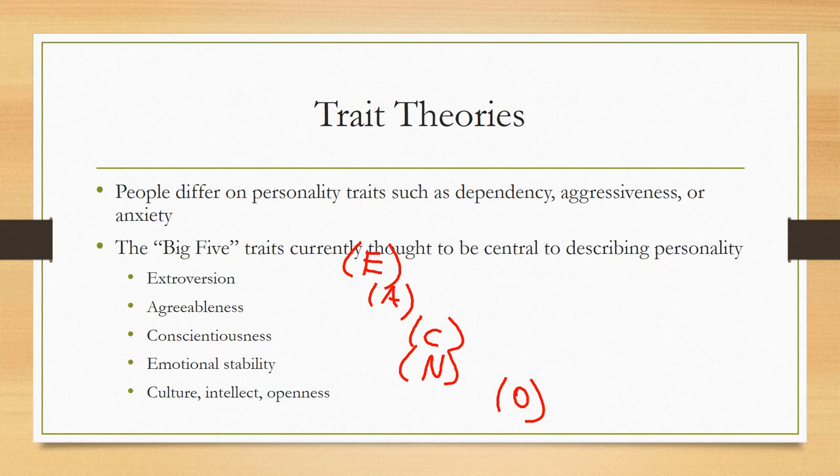Psychologists have done a lot of different theories about how we can measure personality based on personality traits such as dependency, aggressiveness, or anxiety. There are trait models of 16 and some of three, but the one most universally used is called the Big Five traits central to describing your personality. Those Big Five traits are extroversion versus introversion, agreeableness, conscientiousness, emotional stability, culture, intellect, and openness.